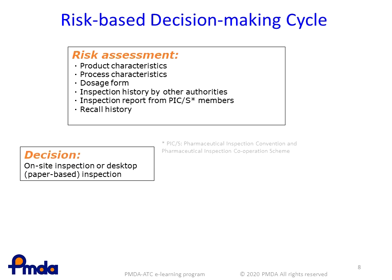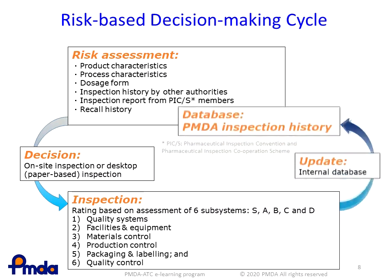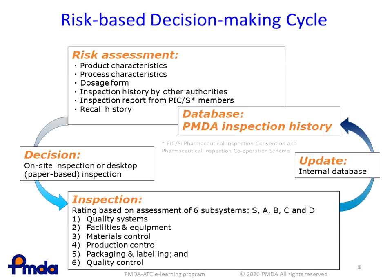In some cases, we request PIC/S member countries that have already conducted an inspection to provide inspection reports for risk assessment. In on-site inspections, six subsystems are inspected — quality systems, facilities and equipment, materials control, production control, packaging and labeling, and quality control — and are rated as S, A, B, C, and D. In desktop inspections, documents to be inspected are determined prior to the inspection based on the country or region where the manufacturing site is located, characteristics of the product, and so on. After the inspection, results are recorded in the PMDA database to serve as a basis for future risk assessment.